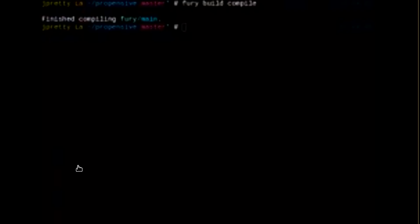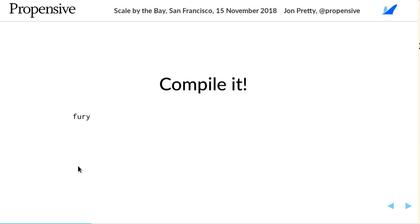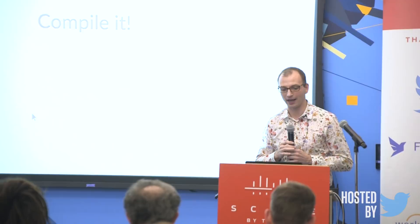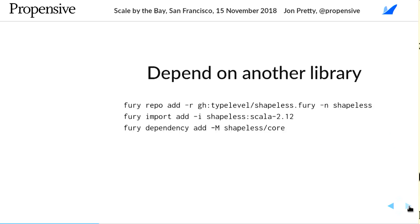If you run it multiple times, it gets faster and faster because it doesn't need to build the same things again, and because the compiler is running hot. I use Bloop for that — Bloop is what provides the actual building back end for Fury. Without Bloop, developed at the Scala Centre, I really couldn't do this.